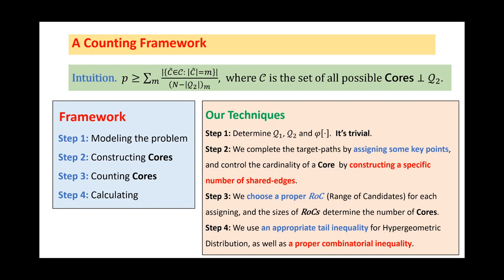In step 1, we should model the problem. It means that we should determine the sets Q₁, Q₂, and the construction Φ. This task is often trivial. In step 2, we need to know how to construct a core with a specific cardinality. More specifically, we complete the target path by assigning some key points and control the cardinality of a core by constructing a specific number of shared edges.